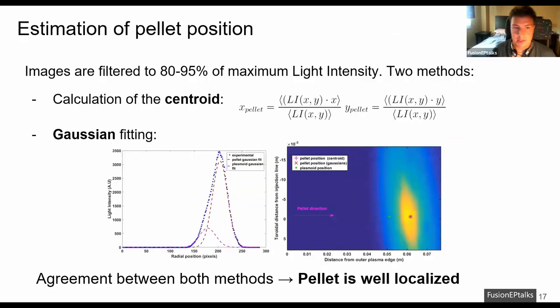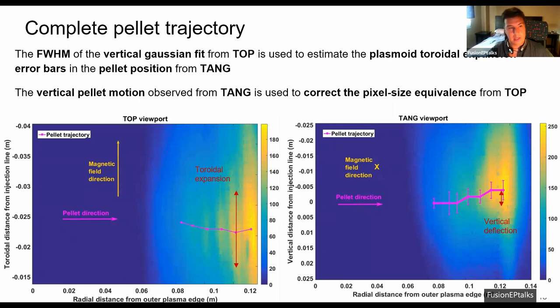When this is done, we can estimate the pellet position. Images are filtered to 80-95% of maximum light intensity since the pellet is assumed to be located in the area of maximum light intensity in a recording. And then the pellet position is calculated by two different methods. The first one is the calculation of the centroid according to this formula and the second one is a Gaussian fitting of the light intensity profile in the recording. Since both methods are normally in agreement, as we can see here, we can conclude that the pellet is generally well localized. And if we repeat this process for different frames in a recording, we can calculate the full pellet trajectory.